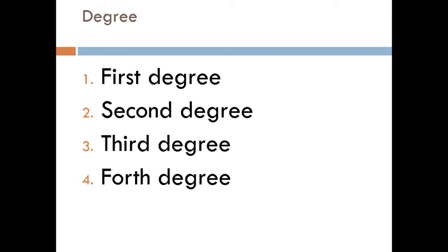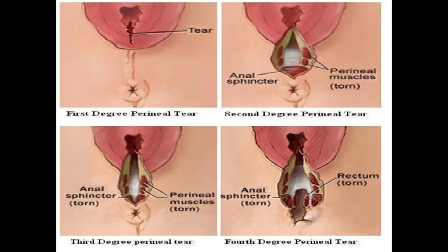We can classify perineal tear into either incomplete perineal tear, which includes the first and second degree, and complete perineal tear, which includes the third and fourth degree. This slide demonstrates the degrees of perineal tear as regards the fourth degree.